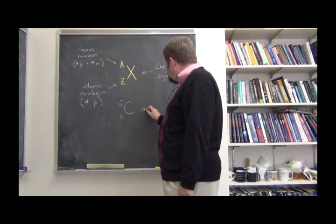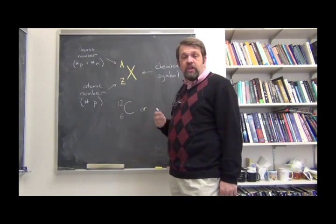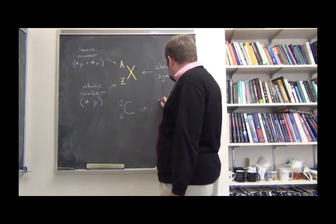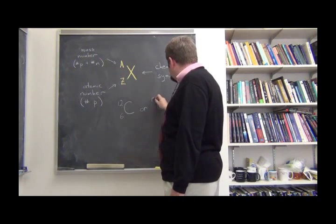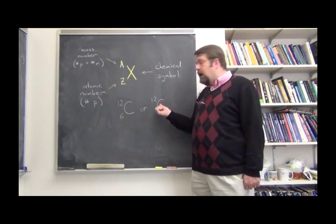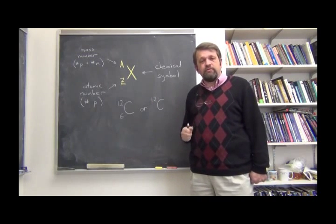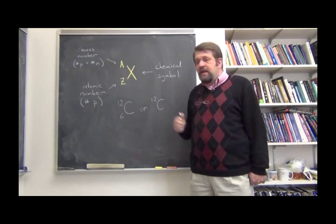And we might write it this way, or if we are sure to remember that carbon has an atomic number of 6, we can write it this way, just carbon-12. Carbon tells us that it has 6 protons. The 12 tells us that the total number of nucleons is 12.